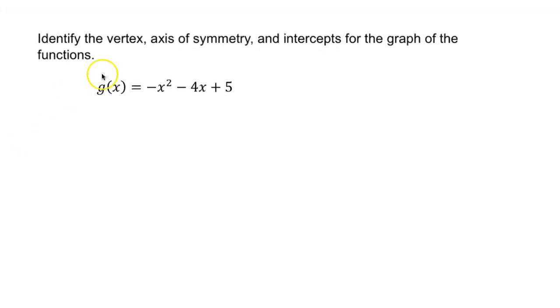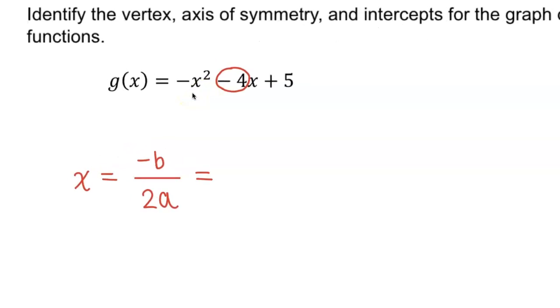First thing they want is the vertex. So let's write the vertex formula: x equals negative b over 2a. b is negative 4. So if I put negative negative 4, that will be positive 4 on the numerator. In the denominator, I'm going to have 2 times the a value of negative 1. So the x-coordinate of the vertex turns into 4 divided by negative 2, which is negative 2.